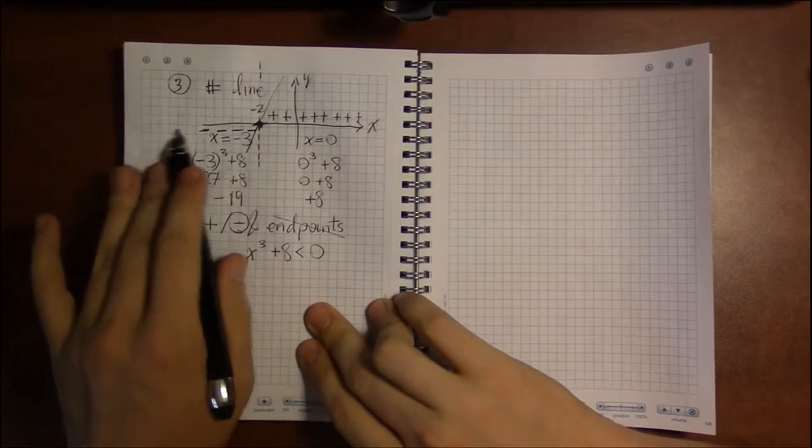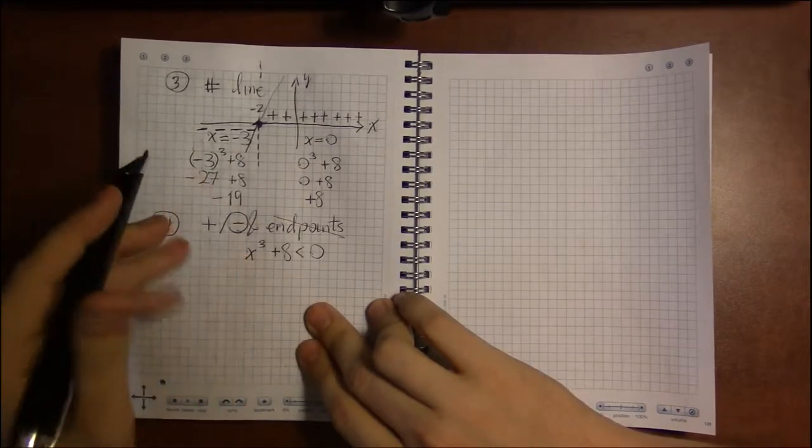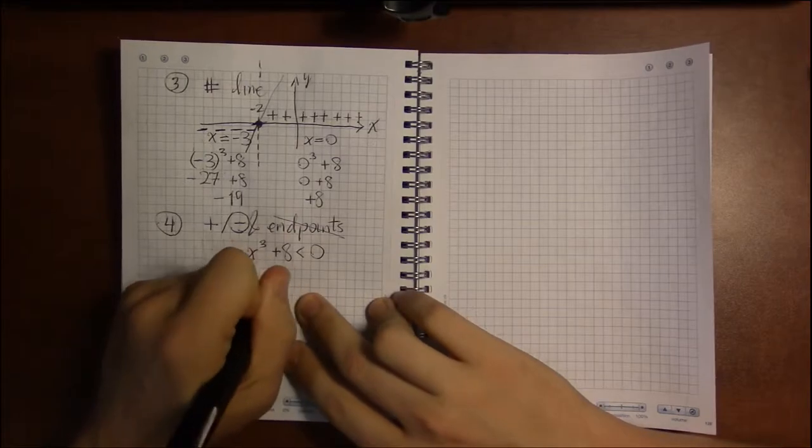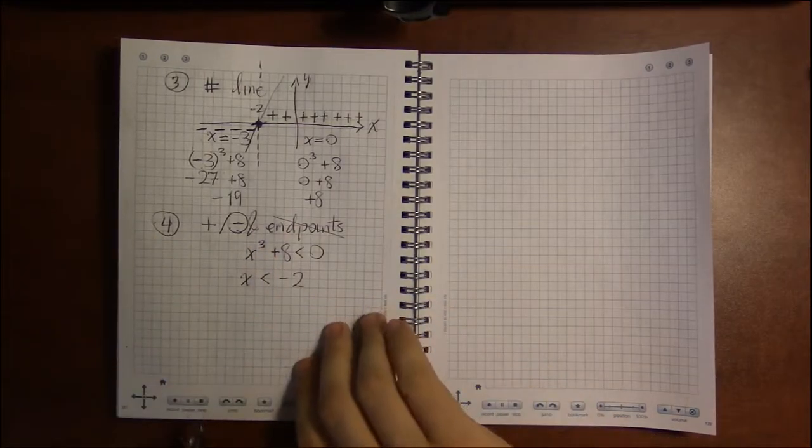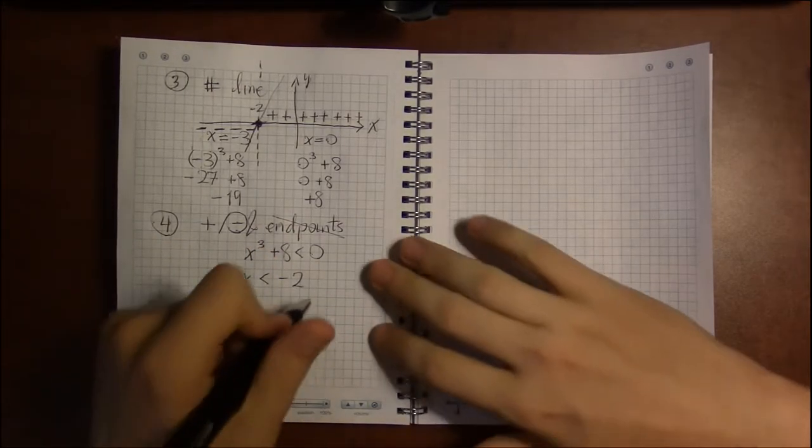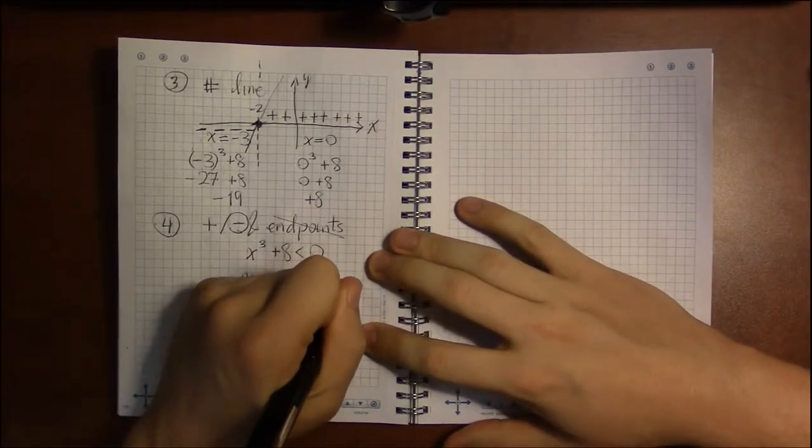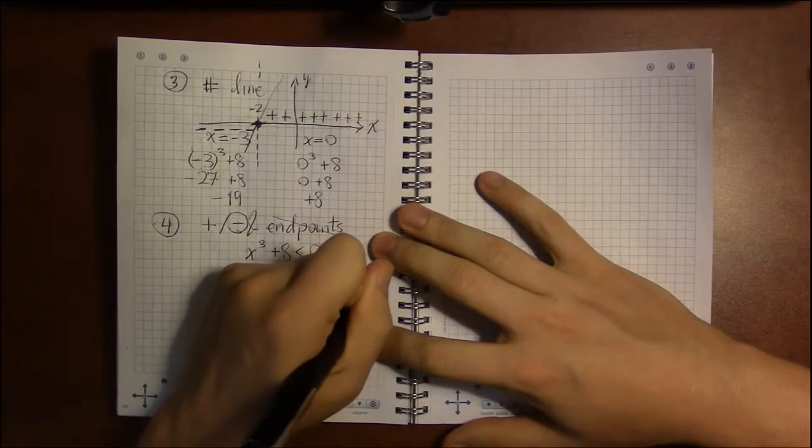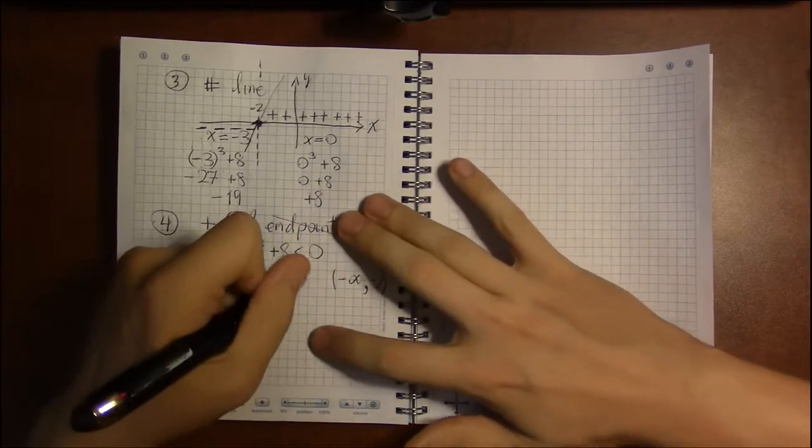So I'm only going to take this interval to the left of minus 2. To the left of minus 2, this is all values less than minus 2, or x less than minus 2. And in interval notation, that's minus infinity, comma, minus 2 with parentheses on both ends.